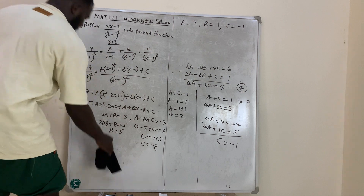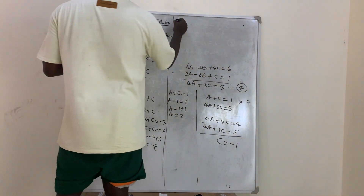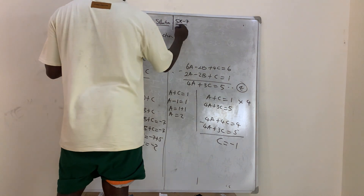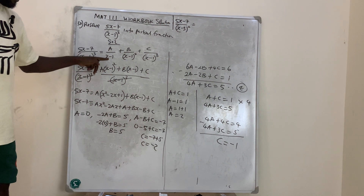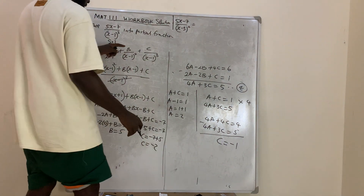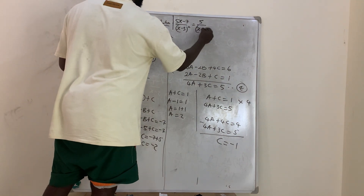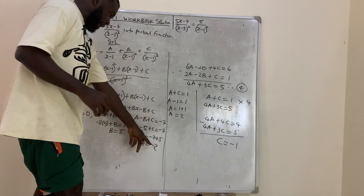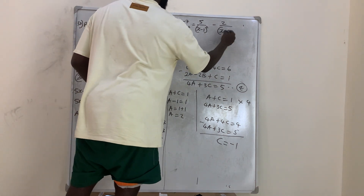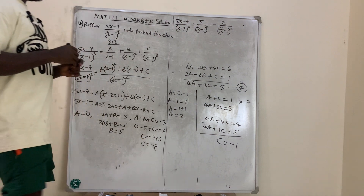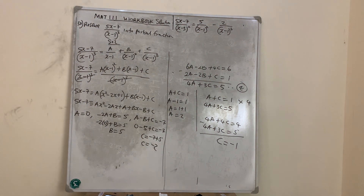Come back and substitute. Since A = 0, that term vanishes. The final answer is: (5x − 7) over (x−1)³ equals 5 over (x−1)² minus 2 over (x−1)³. That is the partial fraction. Thank you very much for watching — please like, share, and subscribe.